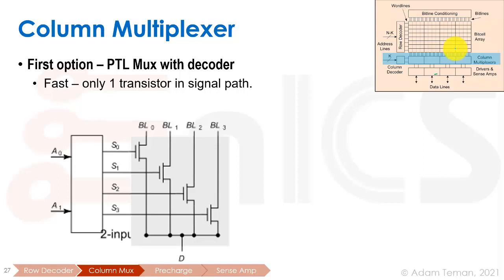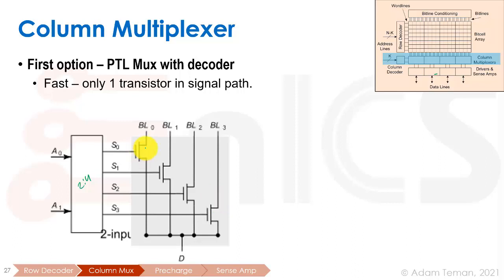The easiest way to implement this is to use a decoder. You can see here we have a two-input decoder: it gets A0 and A1, it chooses one of the one-hot outputs — so it's a two-to-four decoder. The one-hot output is connected to one of the bit lines, so only one will be enabled at a time, driving bit line zero, one, two, or three to the output. It's fast — there's only one transistor in the signal path.